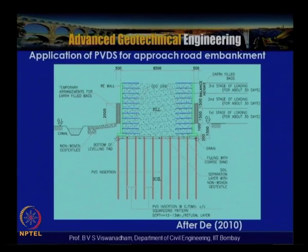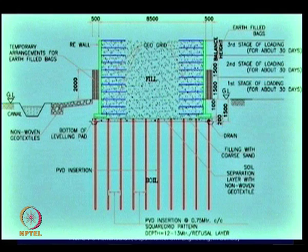Before discussing PVD characteristics in detail, let us consider typical applications. For approach road embankments on soft clays, PVDs can be installed below the base of a reinforced soil wall to accelerate consolidation during embankment construction. A typical cross-section of a back-to-back reinforced earth wall is shown, with a facing, foundation pad, drains, and a drainage blanket at the top.